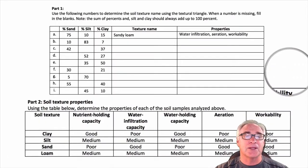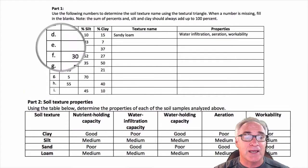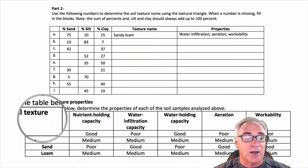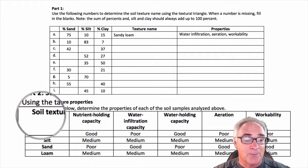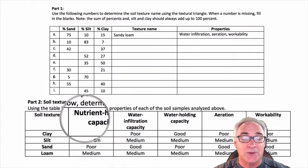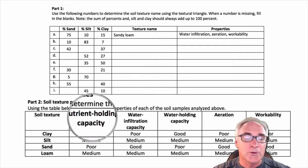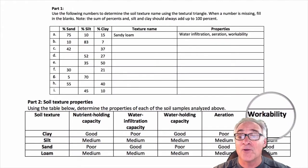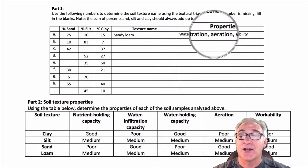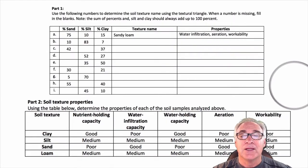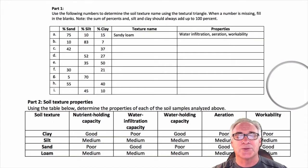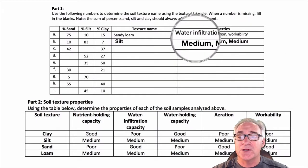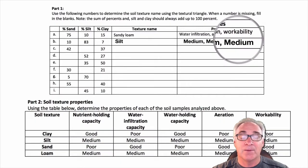Obviously you're going to be taking care of all of this on your own. The next part is to figure out what the properties are — there's a soil texture properties section. At the top you have properties to fill in, from nutrient holding capacity to water infiltration, water holding capacity, aeration, and workability. For this assignment, you have three: water infiltration, aeration, and workability. Let's do the silt one first — on this one, it's all going to be medium: water infiltration is medium, aeration is medium, and workability is medium.